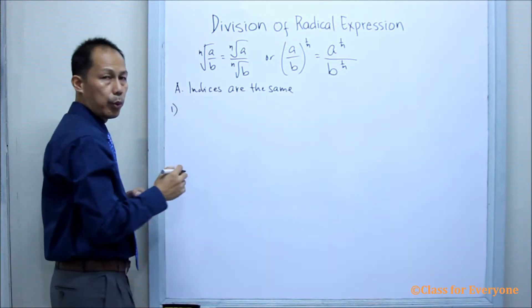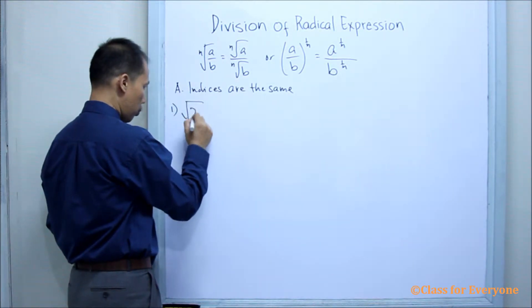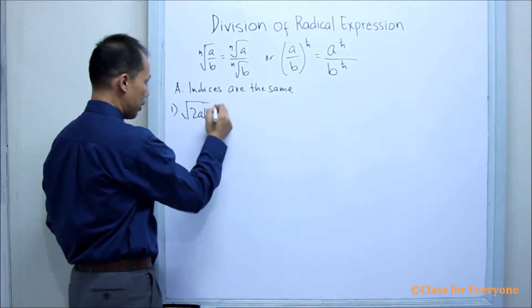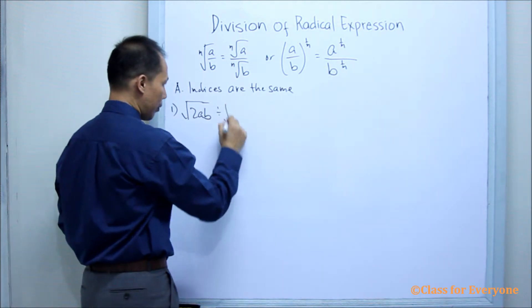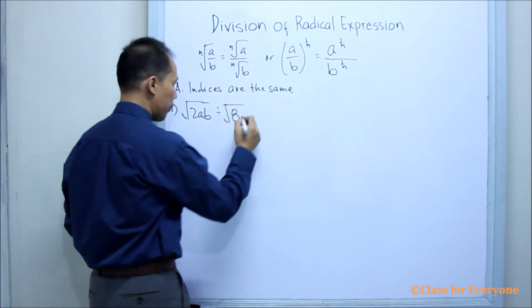In example one, we have, suppose we have the square root of 2ab. Let's make it this way, divided by the square root of 8a to the 5th.